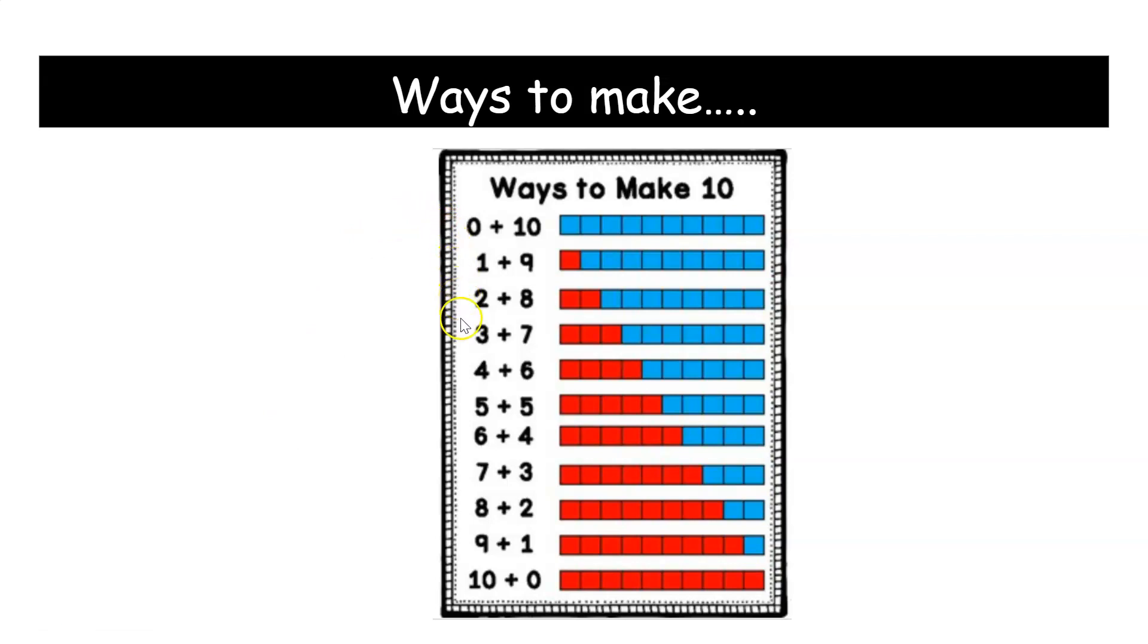2+8, 3+7, 4+6, 5+5. And here we have our turnaround facts: 6+4, remember that's the turnaround fact for 4+6. 7+3 is the turnaround fact for 3+7.